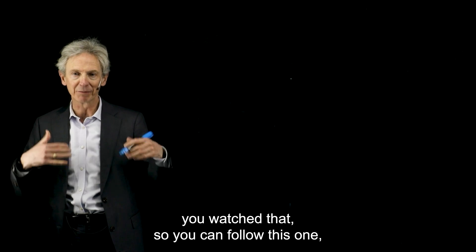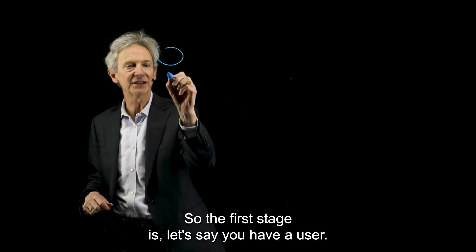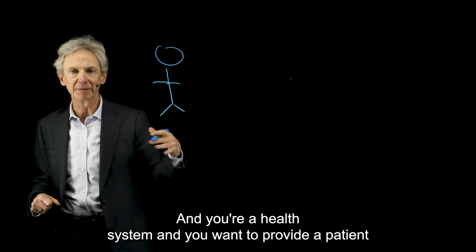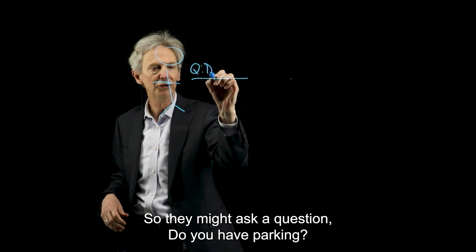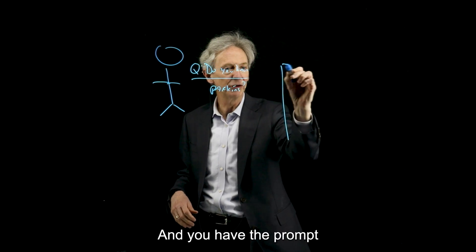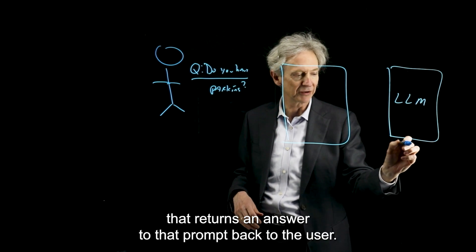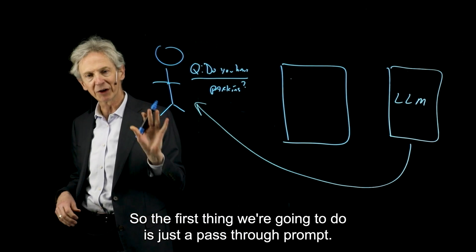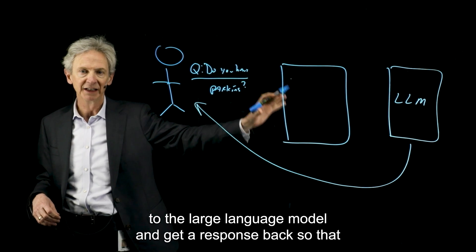So I'm going to do this in three different segments. And if you watch my RAG video first, because I'm going to assume you watched that, so you can follow this one, but we're going to dive into this concept of a prompt before the prompt in three different stages. So the first stage is, let's say you have a user, and you're a health system, and you want to provide a patient chatbot that allows your patients to ask you questions. So they might ask a question, do you have parking? And you have the prompt, and then you have the large language model that returns an answer to that prompt back to the user. So the first thing we're going to do is just to pass through a prompt. We're going to take literally what the user says and pass it on to the large language model and get a response back.